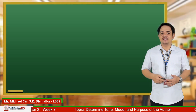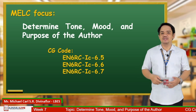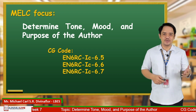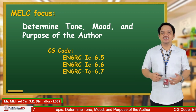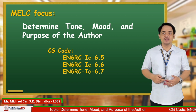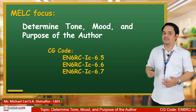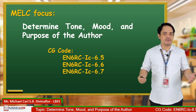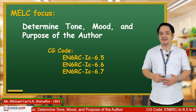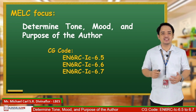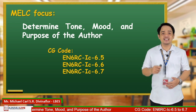Today, we are going to revisit the most essential learning competency: make connections between information viewed and personal experiences, EN6VC-4D-1.4, with a subskill focus on determining tone, mood, and purpose of the author, with the following codes: EN6RC-1C-6.5, 6.6, and 6.7.